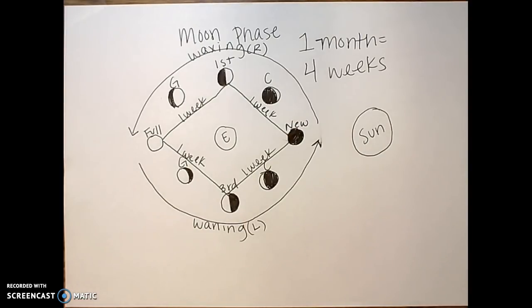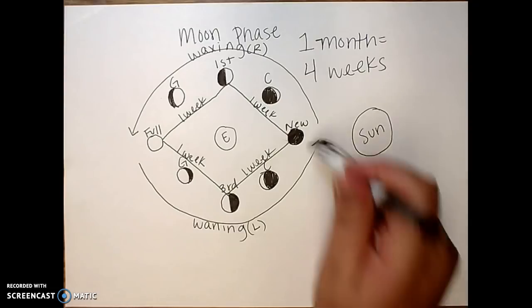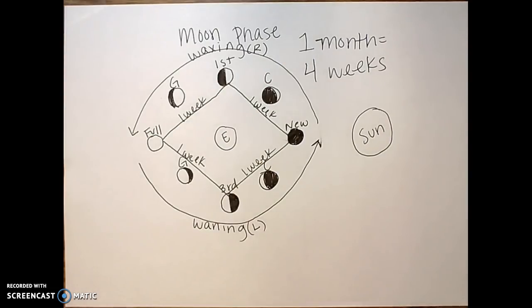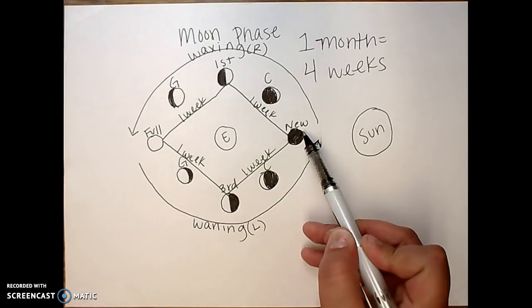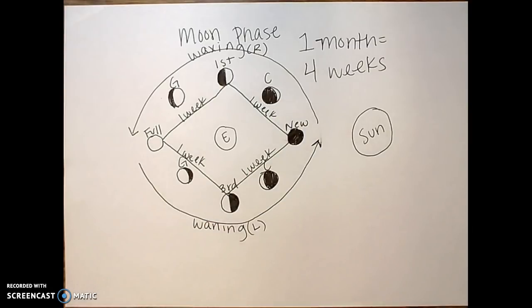Now, so that means I know that two weeks after the new moon, I'm going to have a full moon. One, two. Easy enough. Okay, or three weeks after a third quarter, I'm going to have a full moon. One, two, three. That's how you use this.